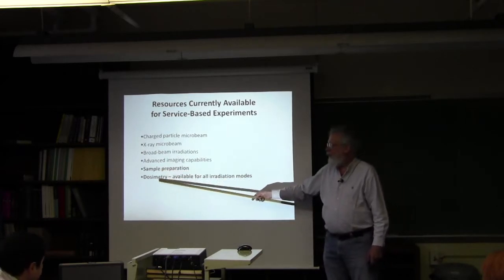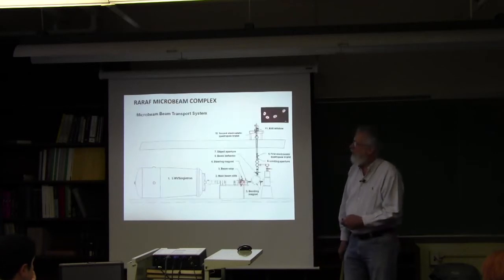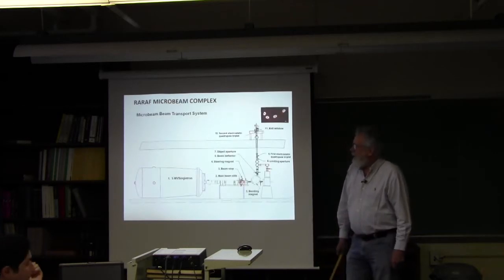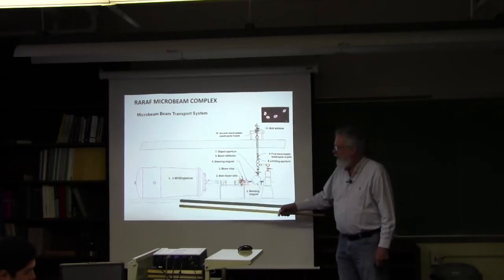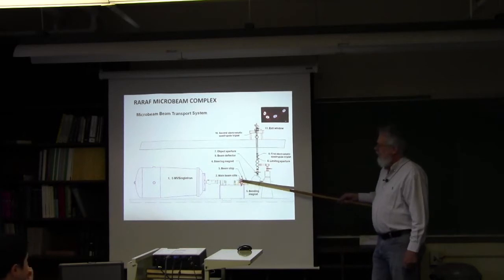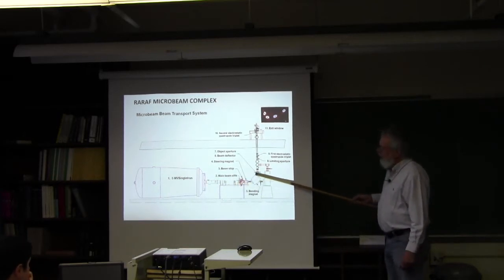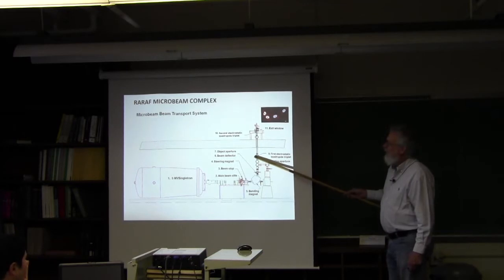The microbeam transport itself has the singletron, a beam line, beam defining slits here, a 90 degree magnet. The object aperture is located just above that. The limiting aperture is located just before the first electrostatic triplet.